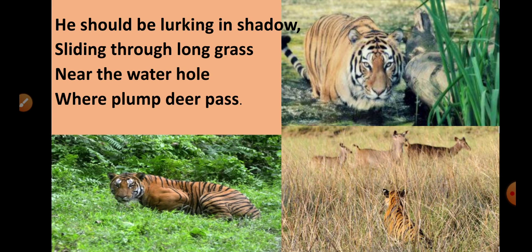He should be hiding behind shadows near the water hole — because that is a place where many animals come to drink water, so the tiger could get his prey easily. Where plump deer pass — plump means fat. So the tiger should have been there hiding in the tall grass to catch its prey.